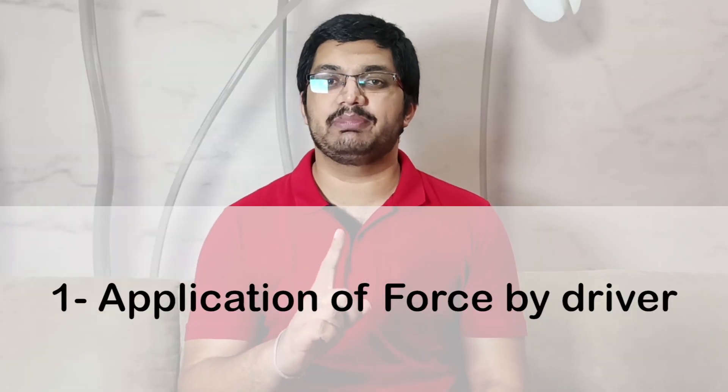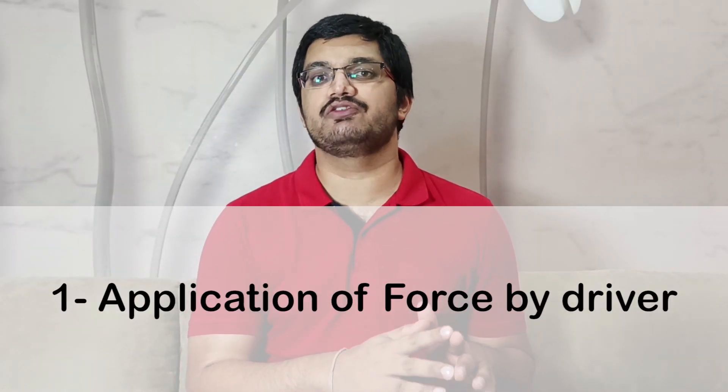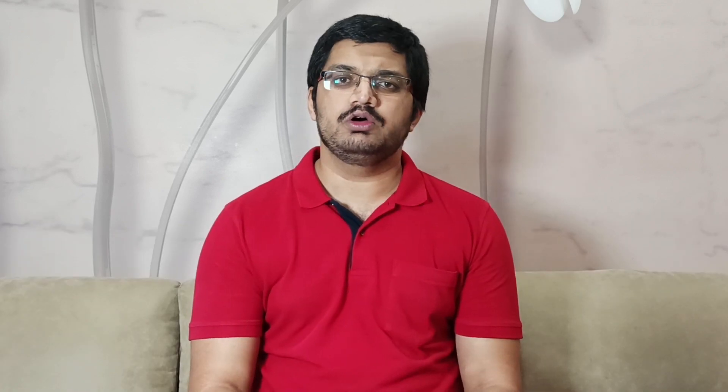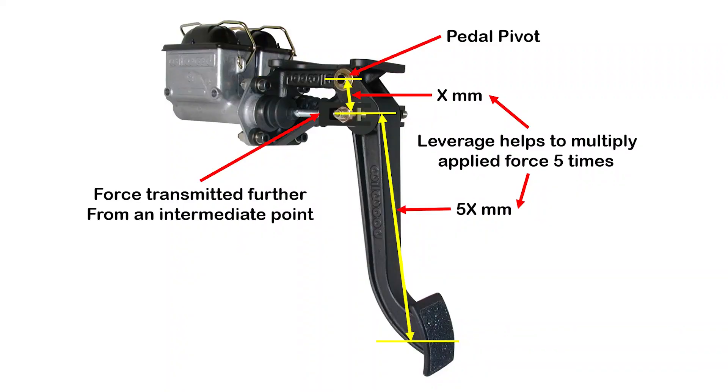Let us start with the first main part — the method of application of force by the driver. The driver uses a brake pedal to apply the braking force. Long ago, there also used to be hand-operated levers, but nowadays those are totally obsolete. The braking force required to stop a vehicle is very high, and a human cannot apply that force with bare hands or feet. That's why we need force multiplication, and the brake pedal is a simple lever which multiplies this force and sends it ahead.